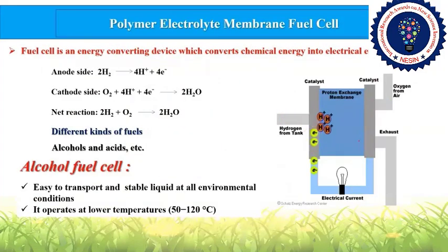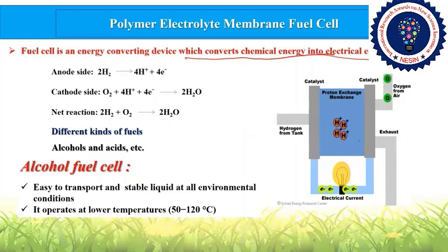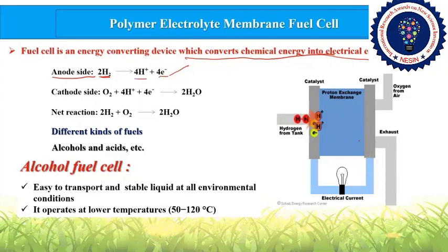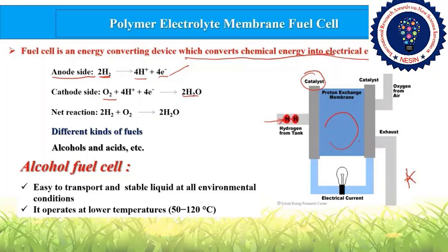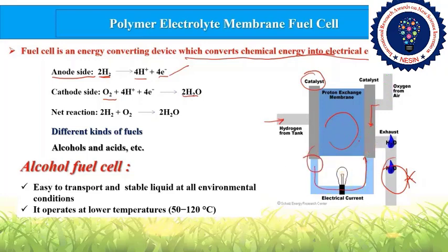I will discuss the basic mechanism of fuel cells. A fuel cell is an energy-converting device which converts chemical energy to electrical energy. At the anode, hydrogen fuel is oxidized to form H⁺ ions and electrons. At the cathode, oxygen is reduced to H₂O. The H⁺ ions move through the proton exchange membrane to the cathode side, and the electrons pass through the external circuit, producing electricity.